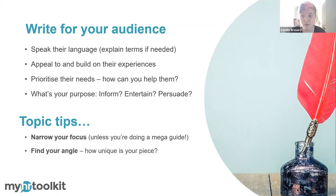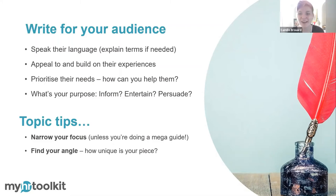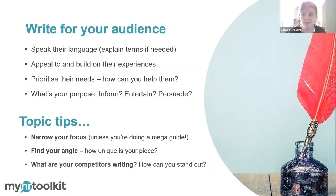You also want to find your angle — there is a lot of content out there online and finding your angle can be difficult. Your angle could simply be that you have the most informative and highest-quality article on the topic — definitely go for it. If you think you could do better than what's already ranking on search engines, go for it. But if you can find a unique angle on something — a question or opinion that hasn't been covered particularly — that can really draw people in. Also look into what your competitors are writing and how you can stand out and build better on what's already out there.